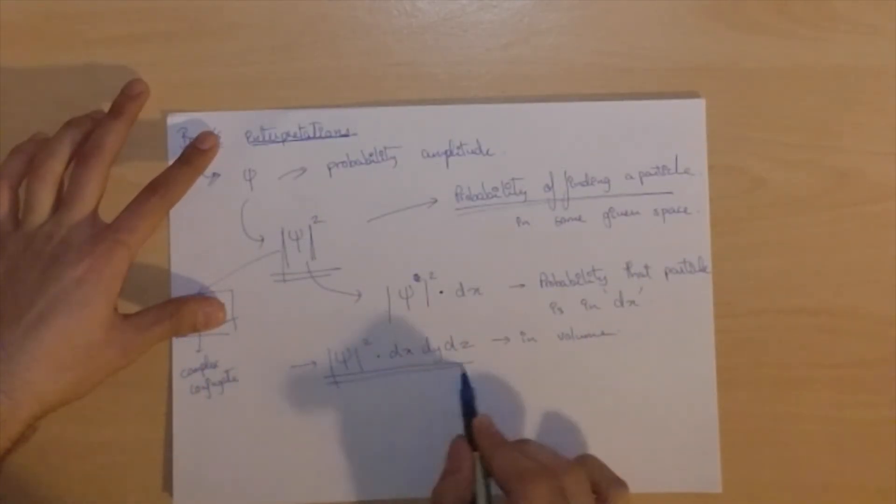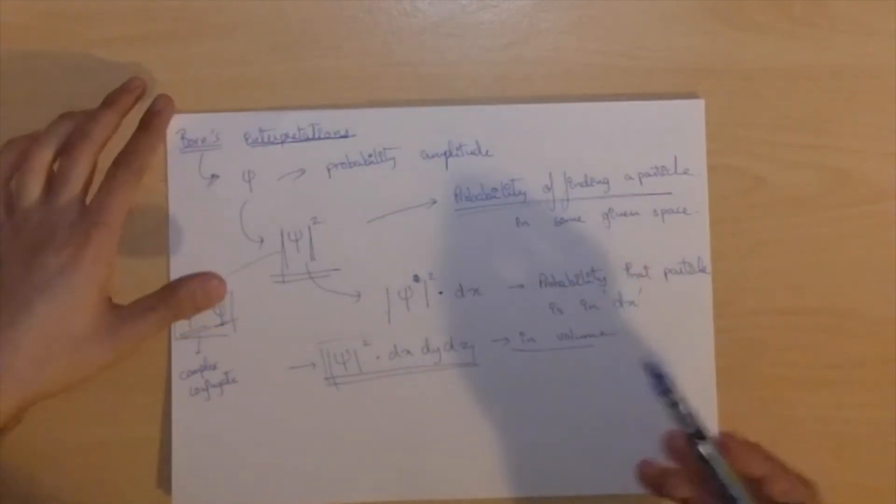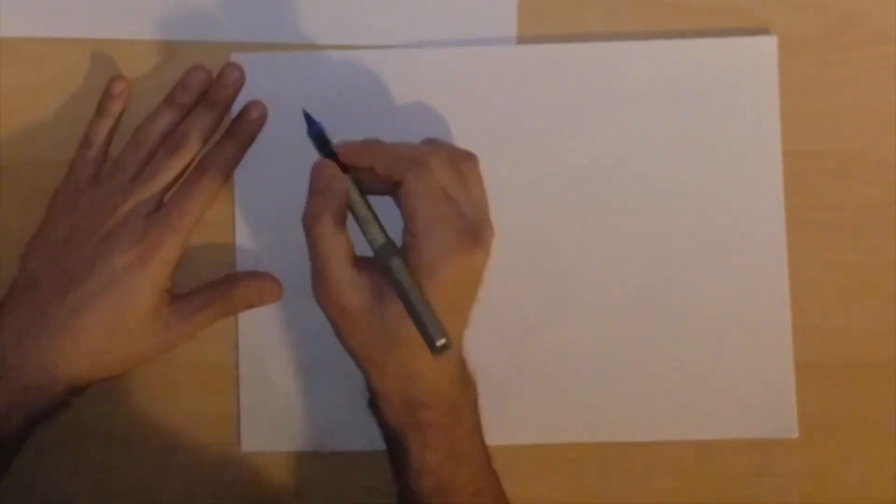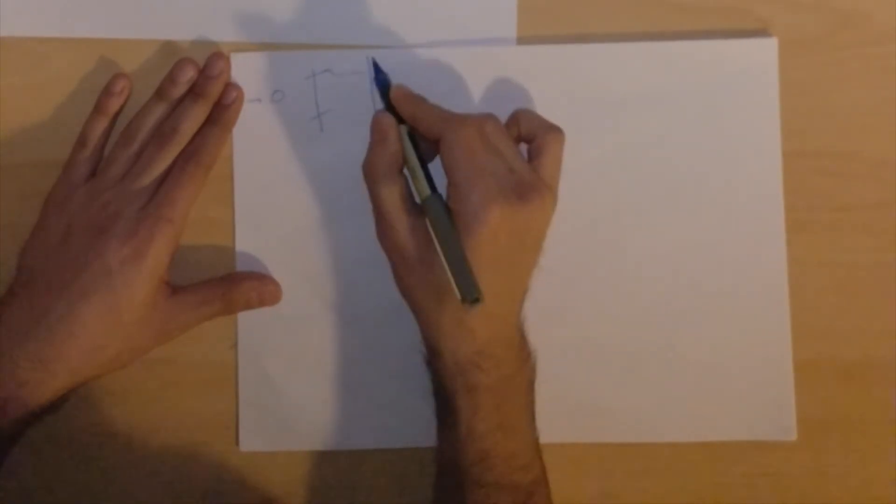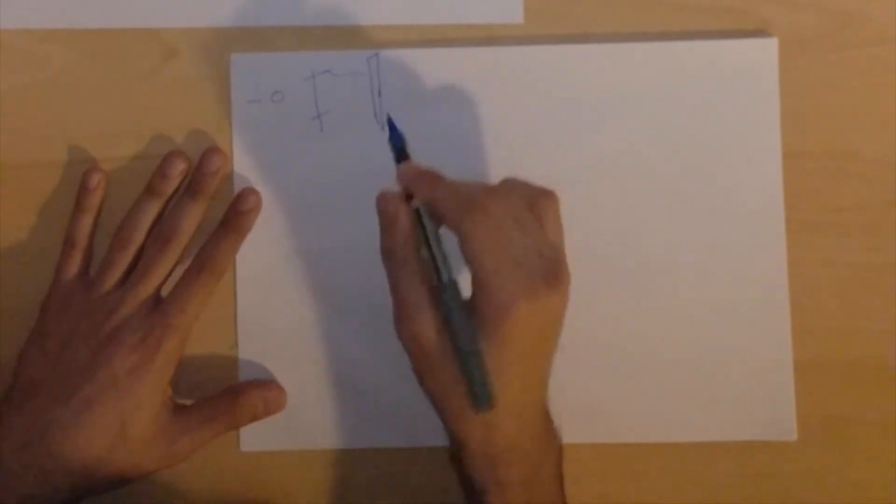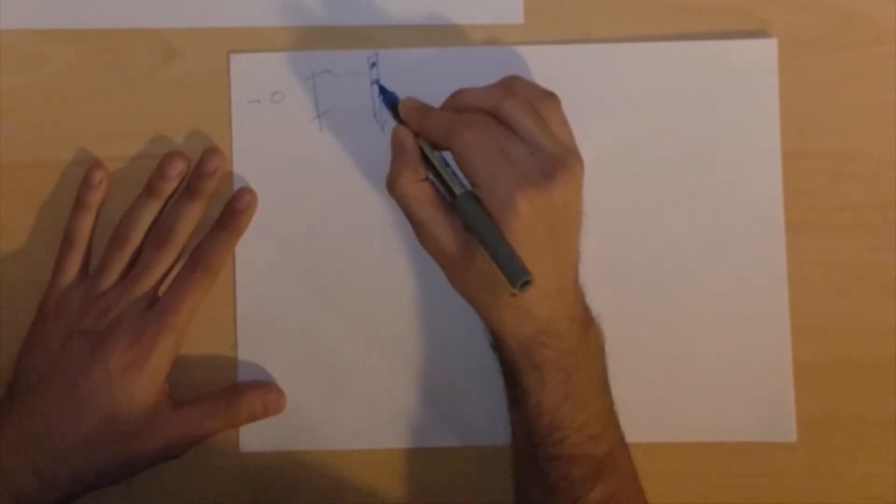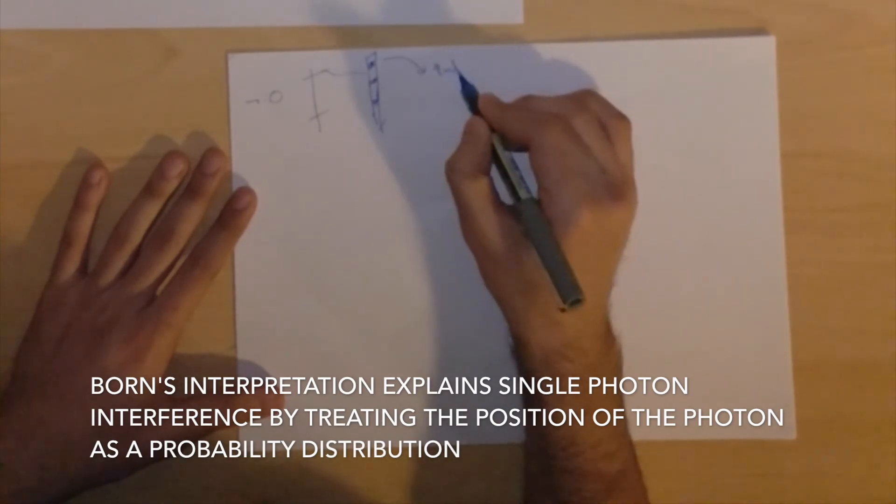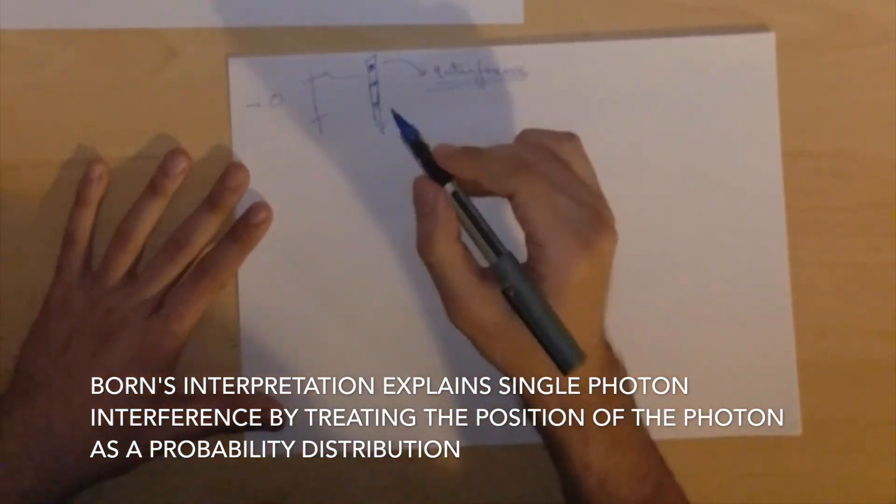So now we're going to see why this psi squared times dx dy dz represents the probability of a particle, and why Born gave his interpretation. So if you remember the single photon experiment, what we did was we took a photon, passed it through a double slit, it went through, and the detector observed single photons interacting with it, but eventually after a long period of time, after you had gathered all the collisions, the pattern looked like an interference pattern. So although it was single particles colliding, they did somehow show an interference pattern.